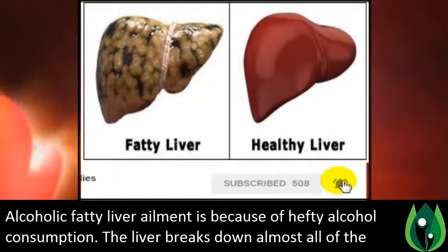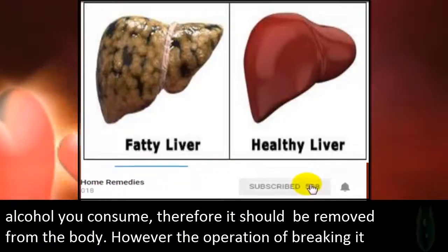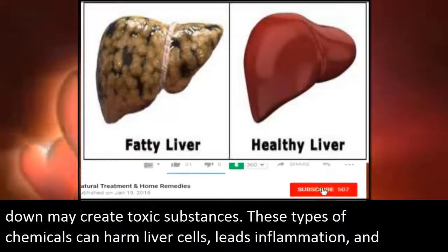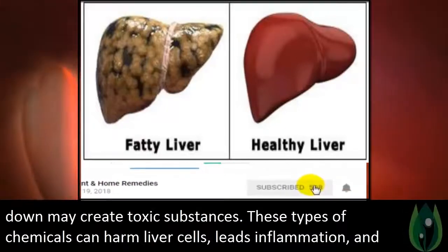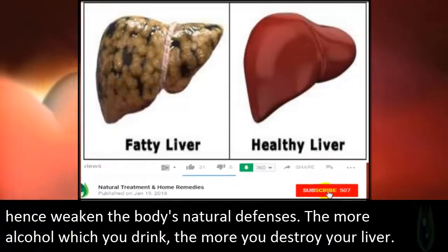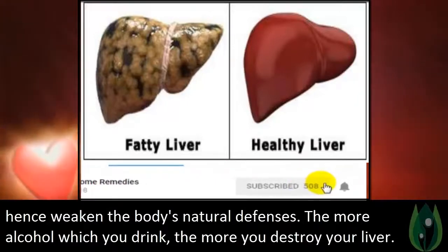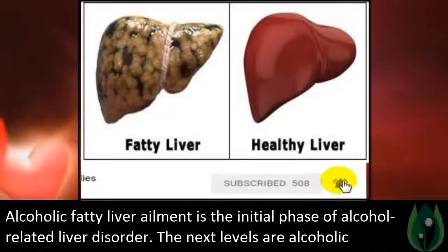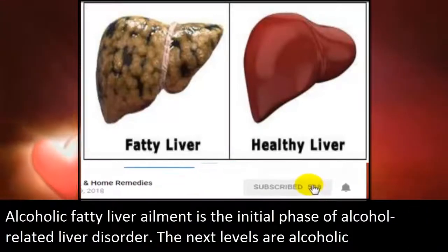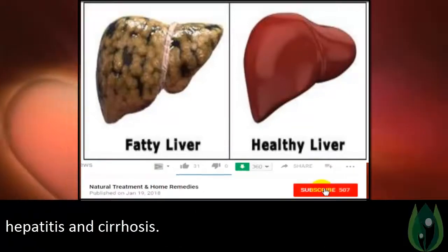The liver breaks down almost all of the alcohol you consume so it can be removed from the body. However, the process of breaking it down may create toxic substances. These chemicals can harm liver cells, lead to inflammation, and weaken the body's natural defenses. The more alcohol you drink, the more you damage your liver. Alcoholic fatty liver disease is the initial phase of alcohol-related liver disorder; the next stages are alcoholic hepatitis and cirrhosis.